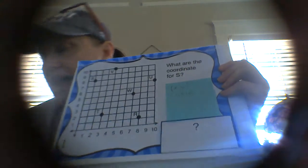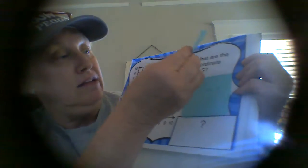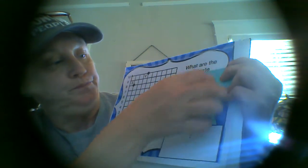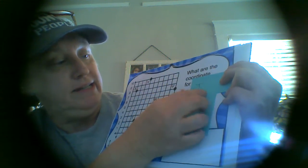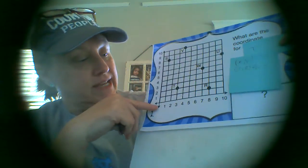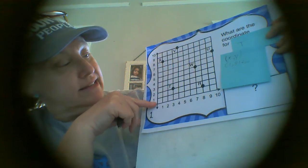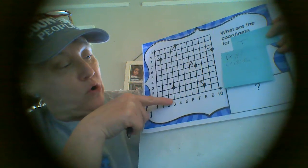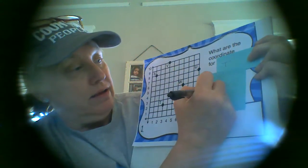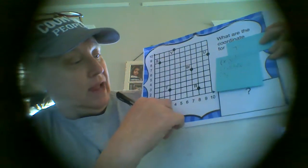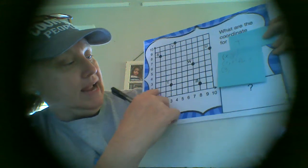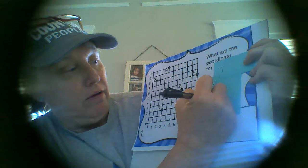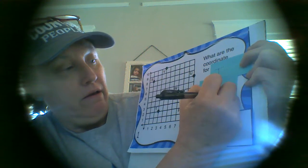Now let's look at finding the coordinate for T. I'll put this down a little lower so you can see it. So once again, we start at our x-axis, going across. There's our T. So we go across, and our x is 3. And then we go up, and our y will be 2 for T.